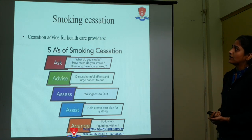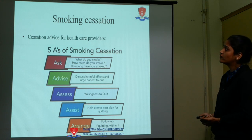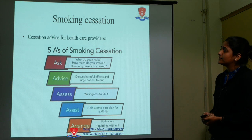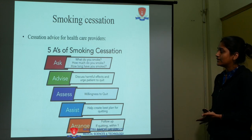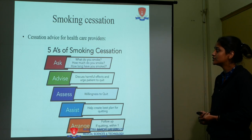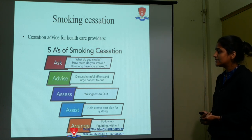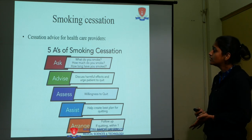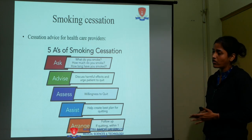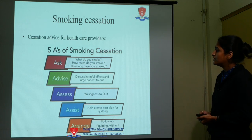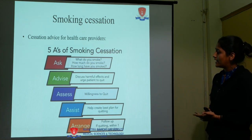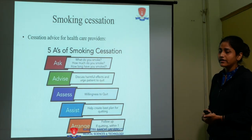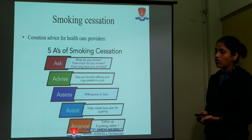Now coming to smoking cessation: cessation advice for healthcare providers involves the 5 A's. First, Ask the patient what they smoke, how much they smoke, and how long they have smoked. Then Advise by discussing harmful effects and urging the patient to quit as soon as possible. Then Assess the smoker's willingness to quit. Then Assist by helping to create the best plan for quitting if the patient is ready. Finally, Arrange a follow-up within one week of the quit date.